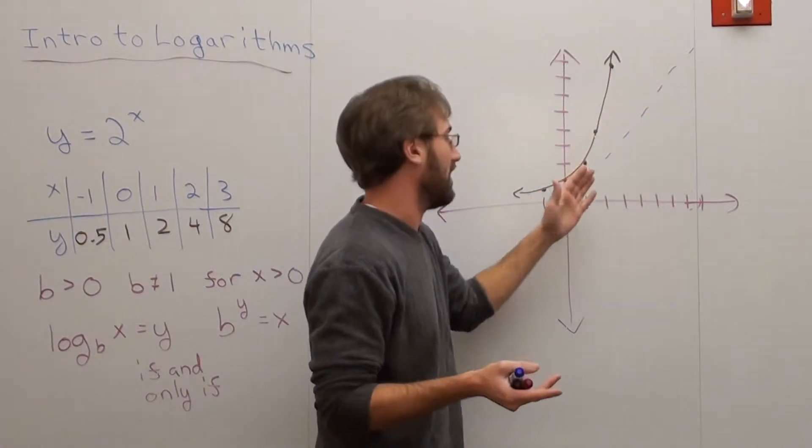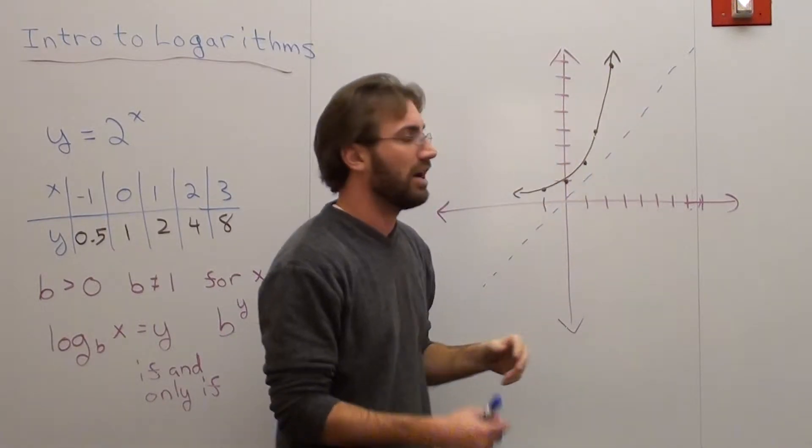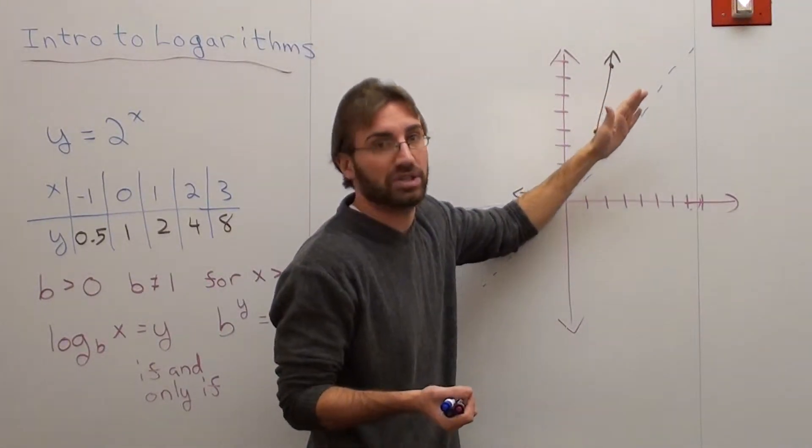is by drawing a dashed line. Well, you don't have to be dashed, but it has to be the line y equals x. Whenever you're finding an inverse of a function, it reflects off this line right here, y equals x.